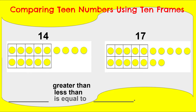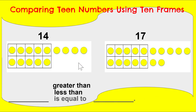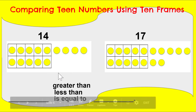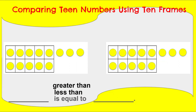Thank you boys and girls for thinking out loud. So we know it's not equal to because they're not the same — the number 14 is not the same as the number 17. Now over here I have four extra: one 10 frame and four extra. And over here to make 17, I have one 10 frame and seven extra. Is there enough in number 14 for them all to have a partner? No. So that means number 14 has to be less. We put our hands close together and say: 14 is less than 17. Can you say that with me? 14 is less than 17. Great job.